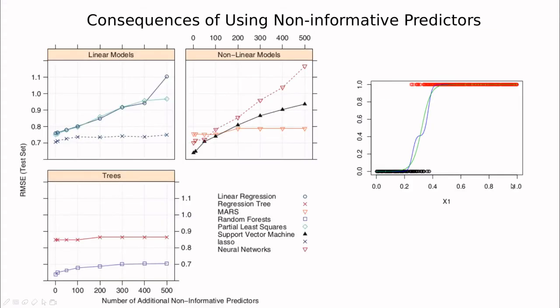So let's take out data. And some guys did this study. So they took different data sets and took different techniques, and they were increasing the number of additional non-informative predictors. So they did basically the same as I've done before.